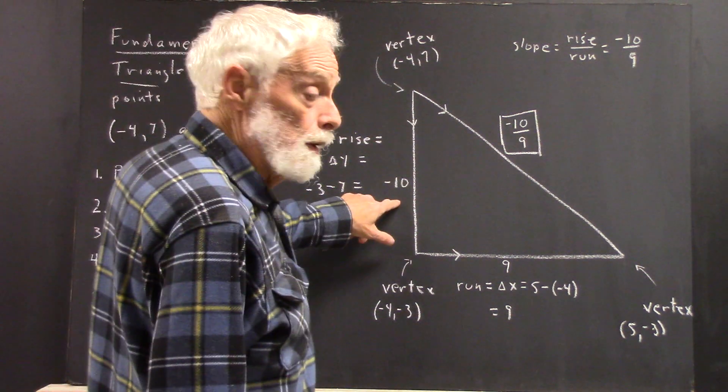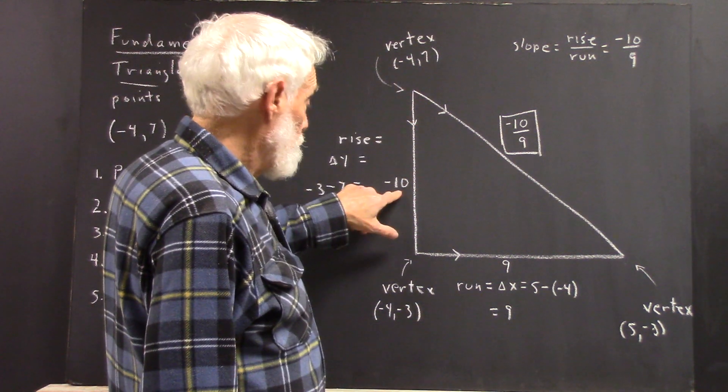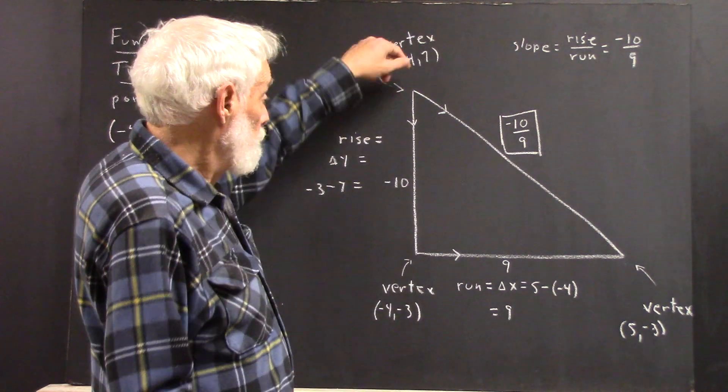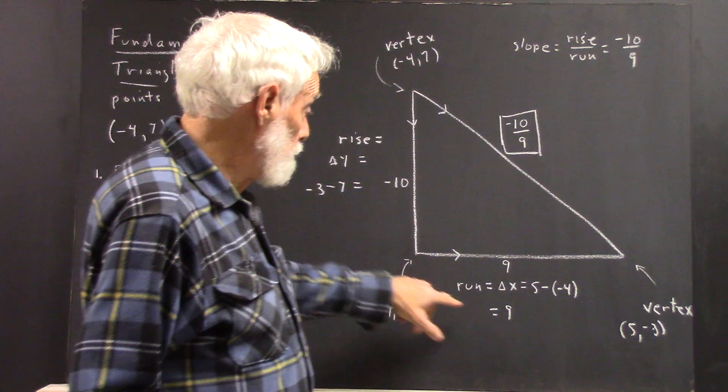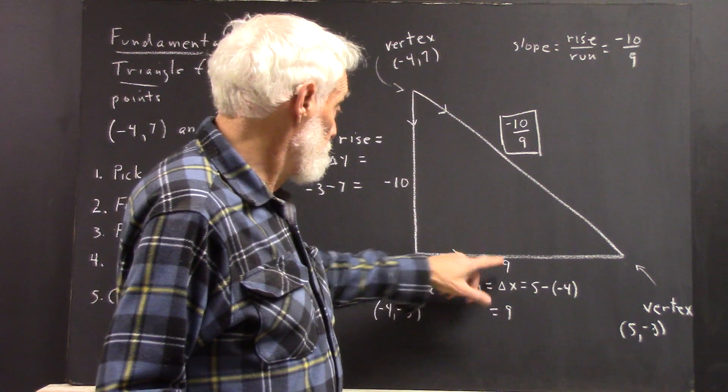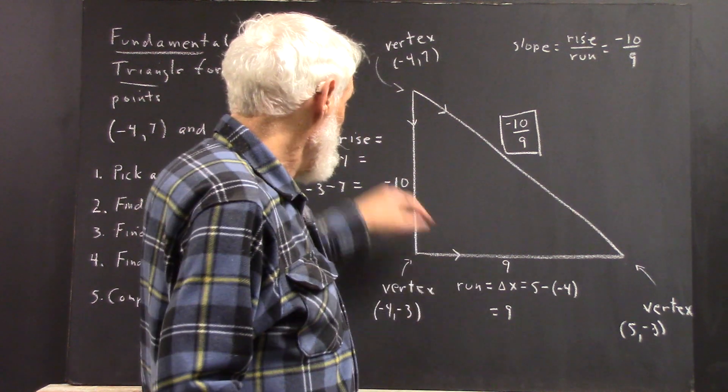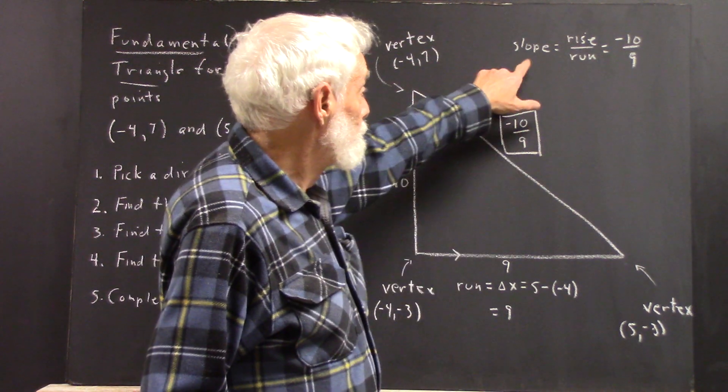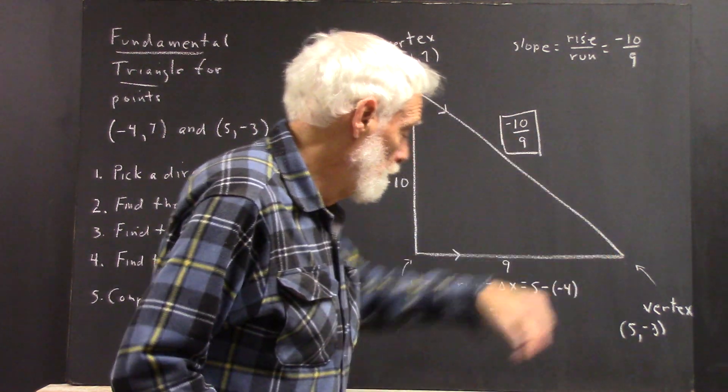Make sure that the label on the vertical leg, that the displacement on the vertical leg in the chosen direction, is right next to the vertical leg. The displacement in the horizontal direction, right next to the horizontal leg. That'll be the rise. That'll be the run. There's the slope. And we put a box around the slope.